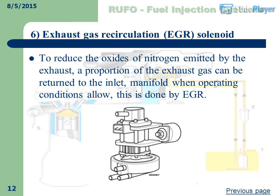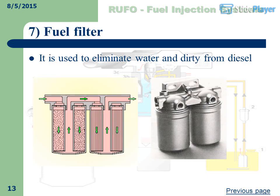Exhaust Gas Recirculation (EGR) Solenoid: To reduce the oxides of nitrogen emitted by the exhaust, a proportion of the exhaust gas can be returned to the inlet manifold when operating conditions allow. This is achieved by the EGR solenoid.